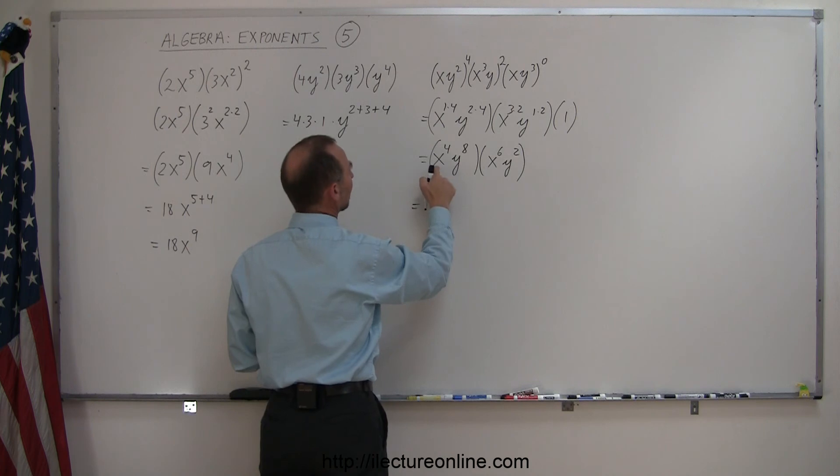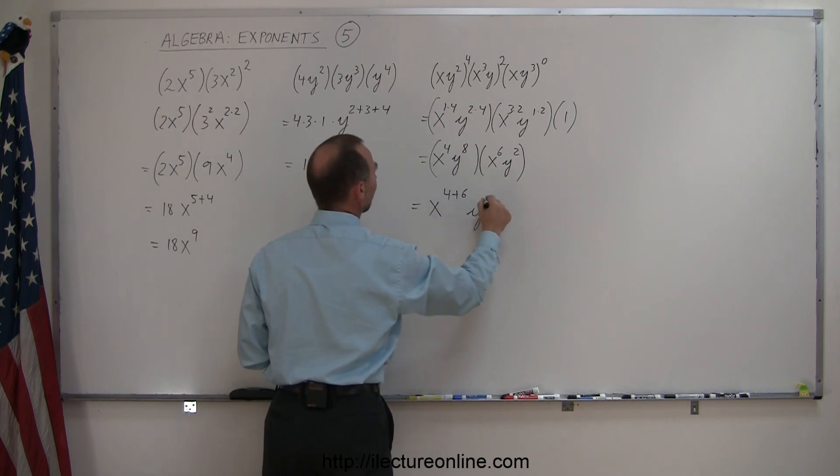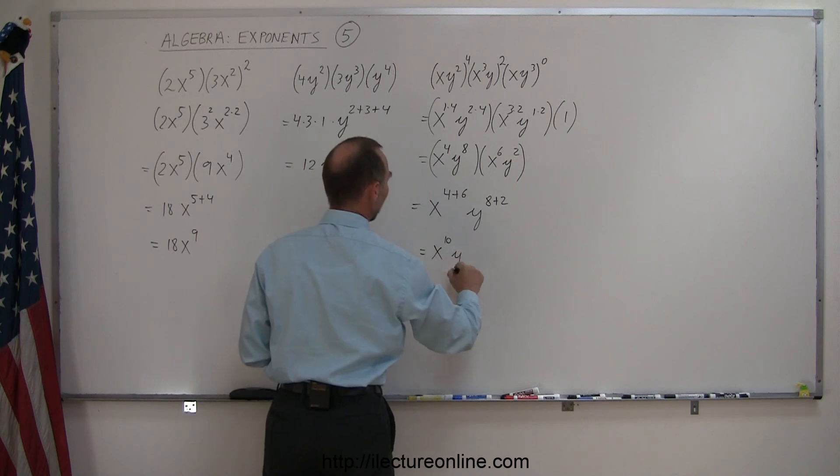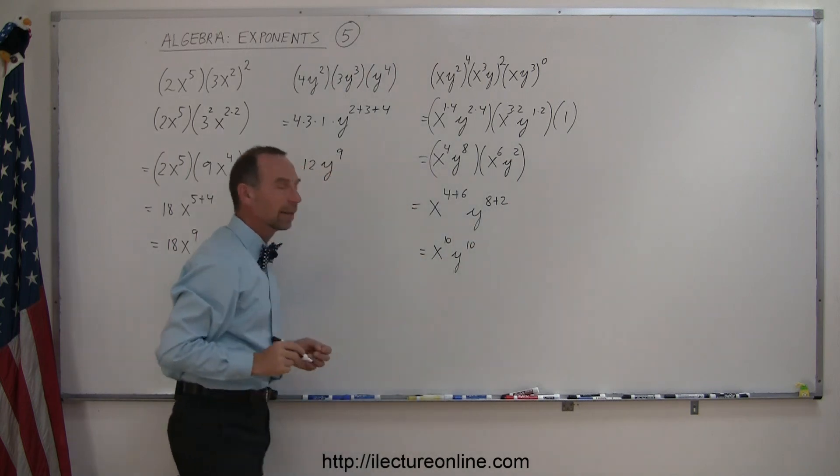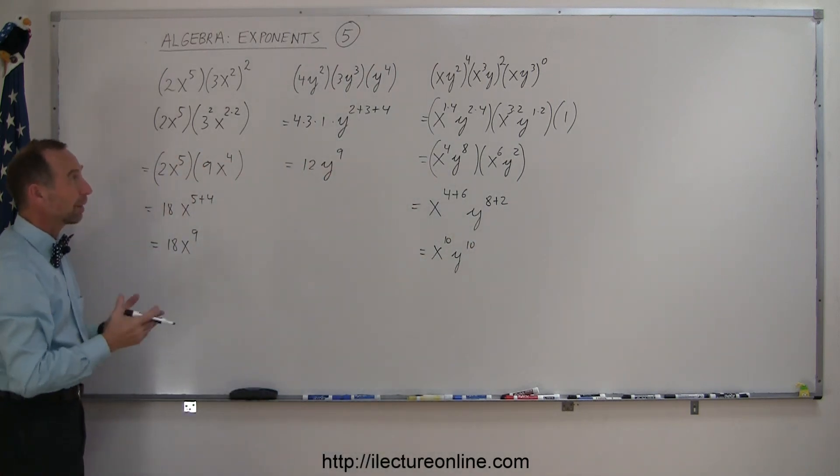So now we're going to go ahead and multiply these together. When the bases are the same, we simply add exponents, so this becomes x to the 4 plus 6, and y to the 8 plus 2. And so this is equal to x to the 10th, y to the 10th. And that's the answer there. So that's how you deal with exponents that look like this.